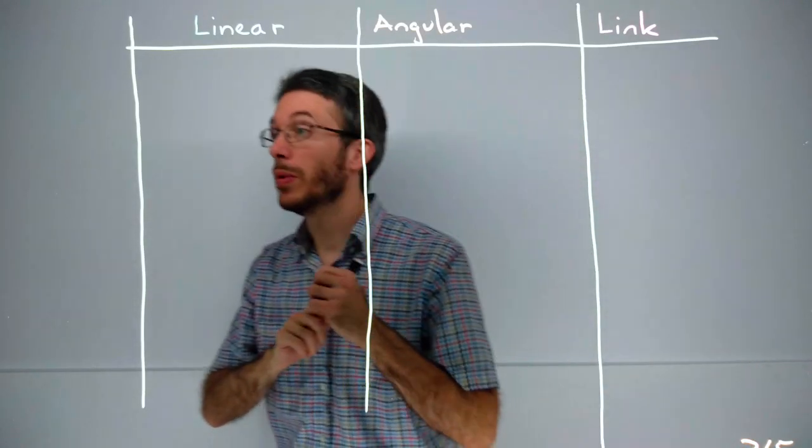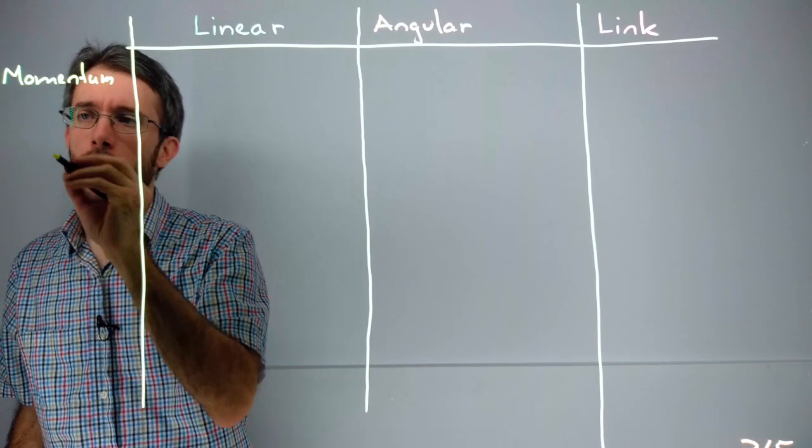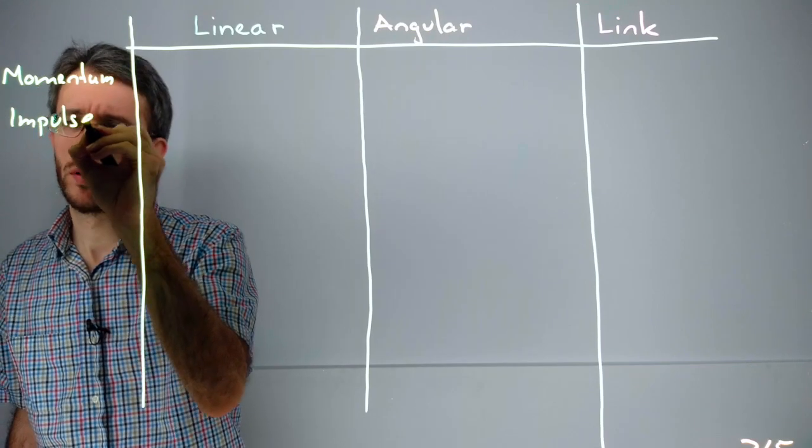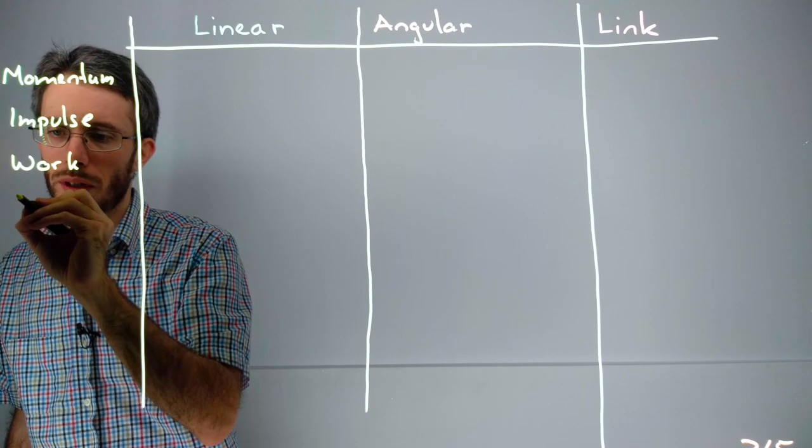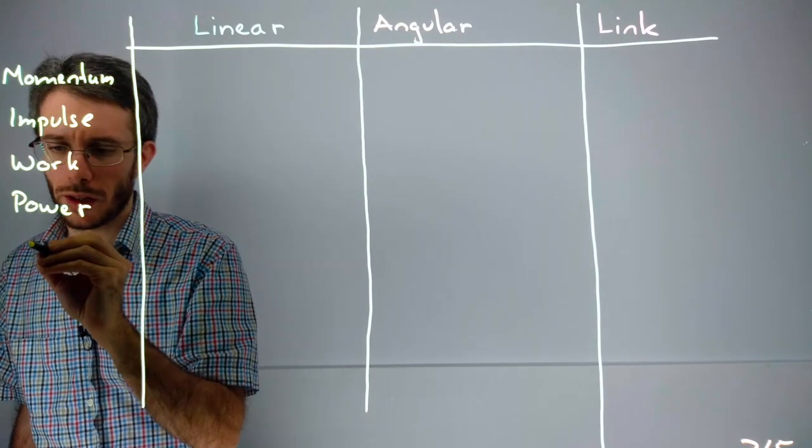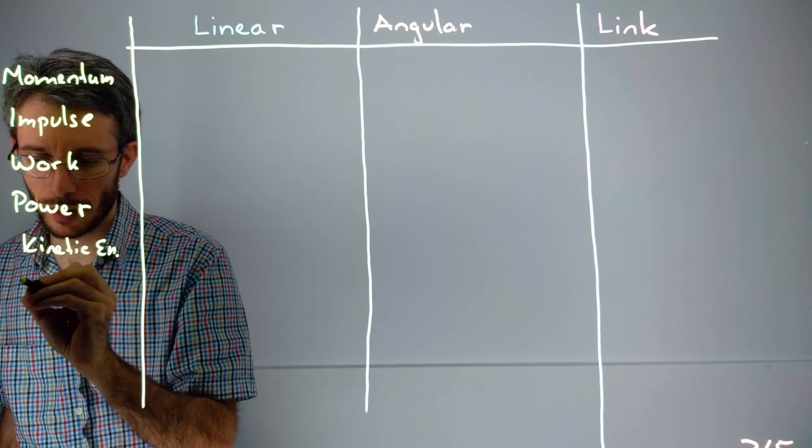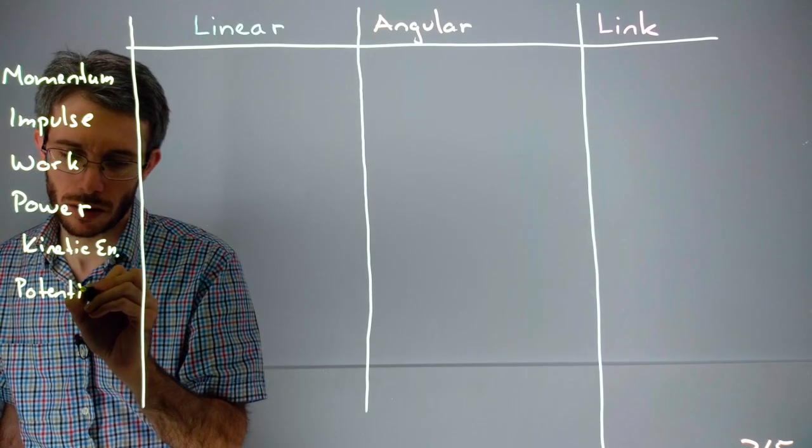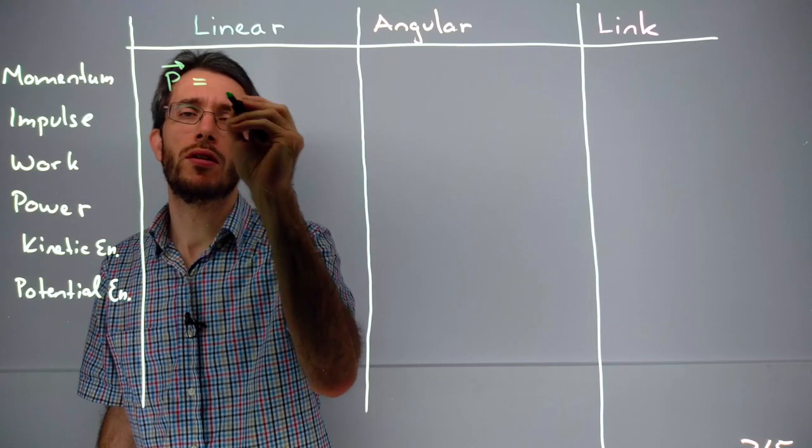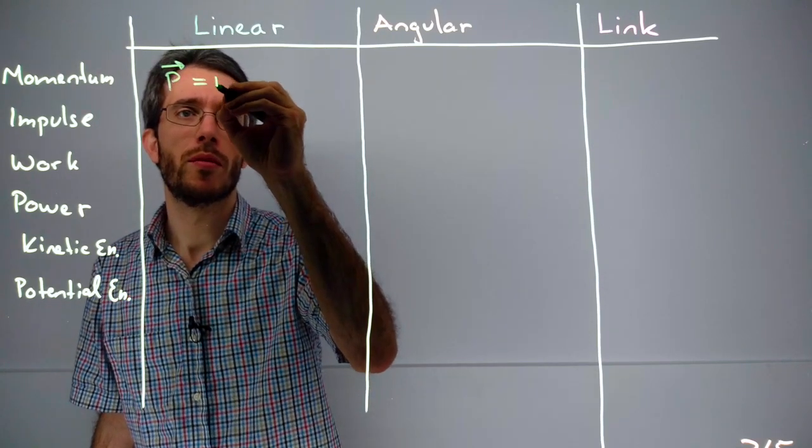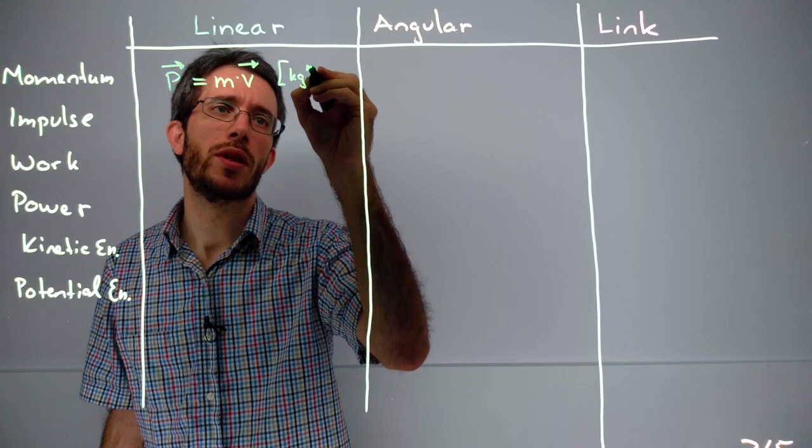On our next page, we're going to be looking at momentum, impulse, work, power, kinetic energy, and potential energy. Momentum in the linear case, p, was calculated as mass times velocity with the unit kilograms meters per second.